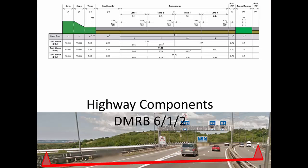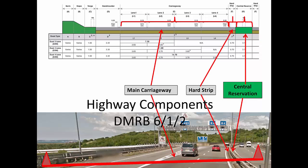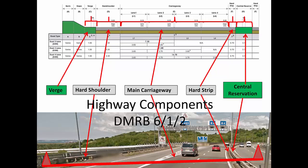The components are the main carriageway, which is the active lanes of traffic, the central reservation, the hard strip, the hard shoulder, and the verge. In this case we're on a bridge, so you haven't got a verge, but on normal ground you would have a verge in addition.